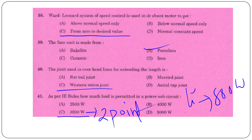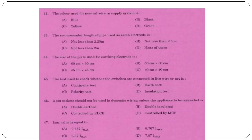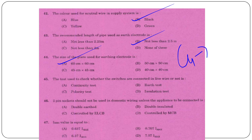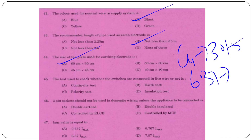Fuse wire is made from a lead-tin alloy. The joint used in overhead lines is the Western Union joint. As per IE rules, the load permitted in a power sub-circuit is 3000W with 2 points; lighting sub-circuit is 800W with 10 points. The color used for neutral wire in AC supply is black. Recommended length of pipe used as earth electrode is not less than 2.5 metres. Size of plate for earth electrode: copper 16×60 with 3.15mm thickness, GI pipe 6.37mm.